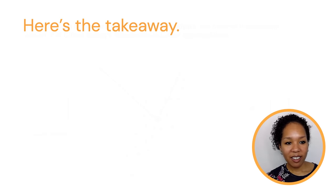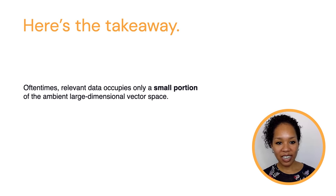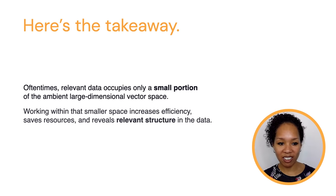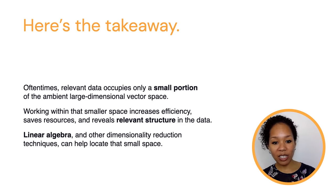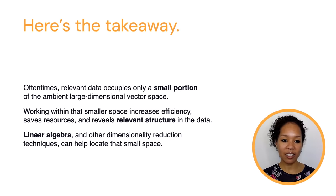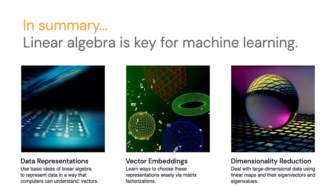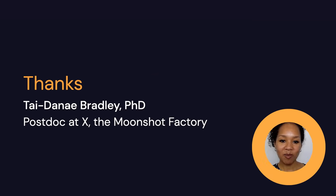Here's the takeaway: oftentimes relevant data will occupy only a small portion of some larger ambient vector space, and you'd like to find a way to work in that smaller-dimensional space that increases efficiency, saves resources, and reveals relevant structure in your data. Linear algebra and dimensionality reduction techniques can help you locate that smaller-dimensional space. That's a quick overview of how linear algebra appears in machine learning. I hope the takeaway is that these ideas are key, but there's a lot more to explore. Do check out the videos, papers, and books mentioned throughout the talk. Thanks so much for your time.